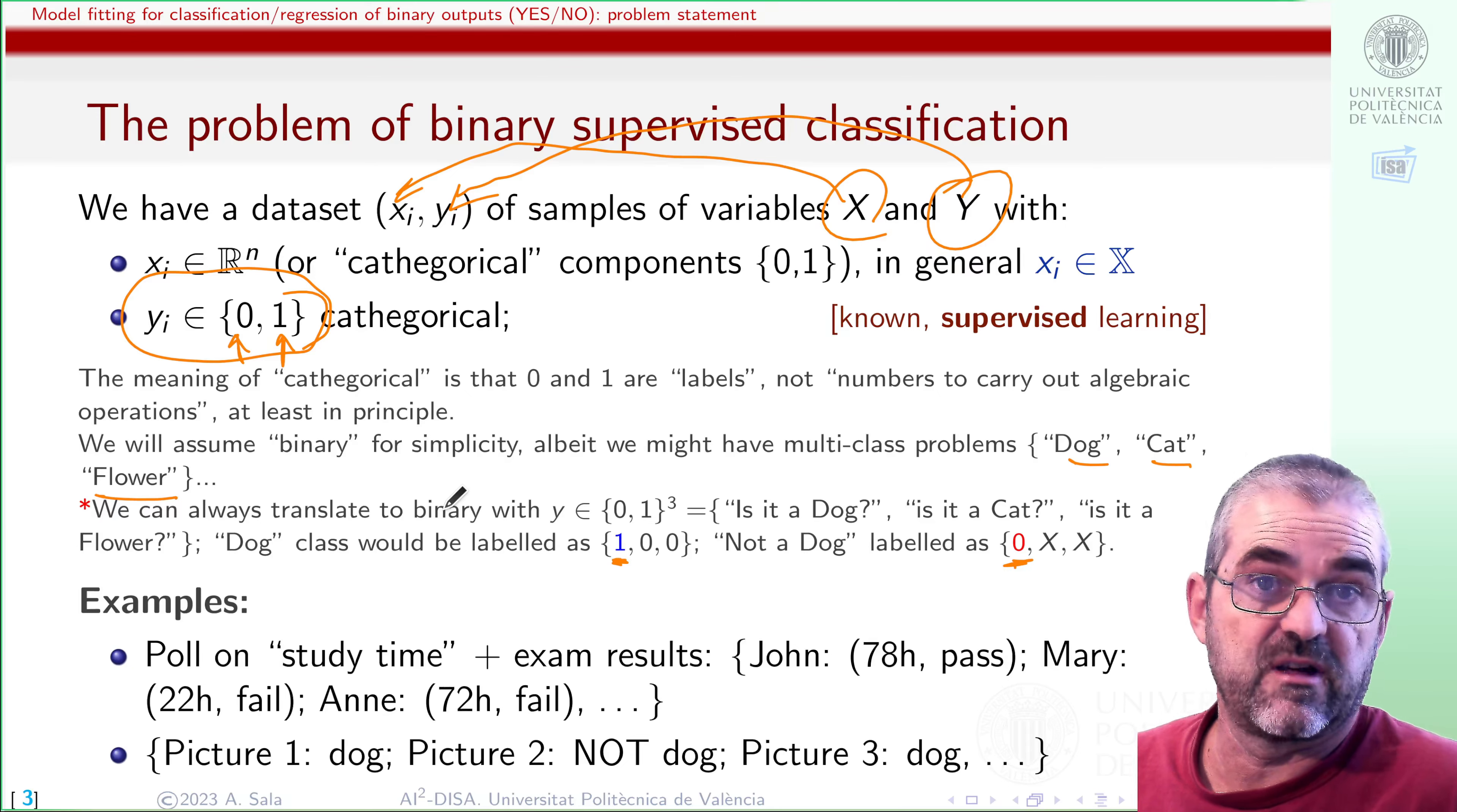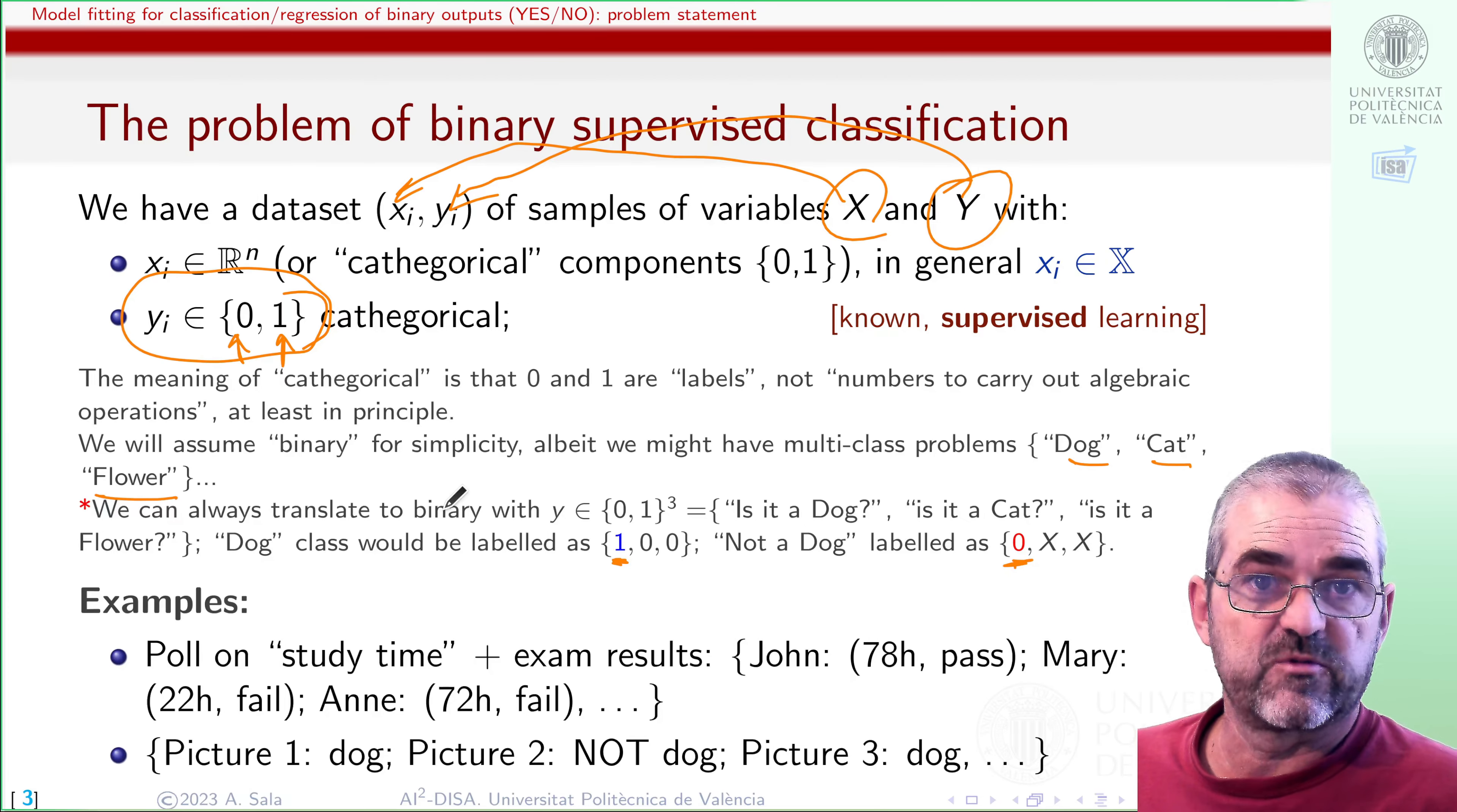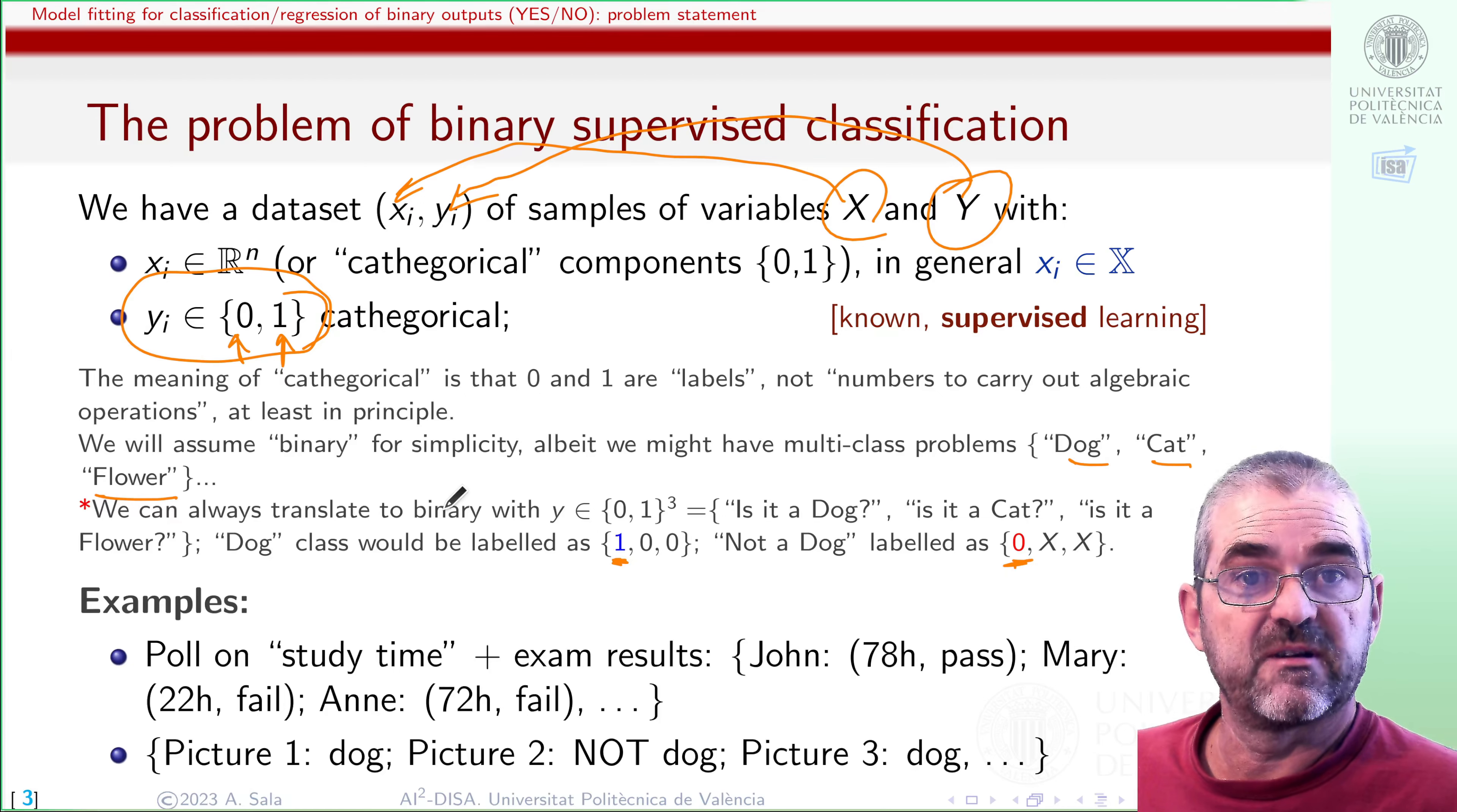Of course, if I then solve the problem in a separate way, then I lose somehow the crosstalk between the classifiers. Maybe the dog classifier could tell the flower classifier that he thinks a given picture is 99% sure a dog. So, with that information, the flower classifier might do a better job. But that's part of the solution of the problem. In the abstract problem statement, we have a set of binary output variables, so we may write our theoretical stuff or our code on these binary target outputs of my module. But exploiting the interdependence among them, that's another issue.